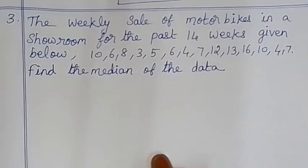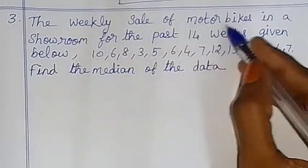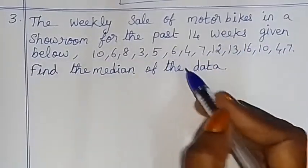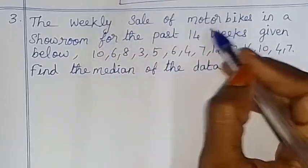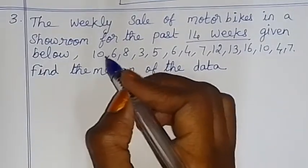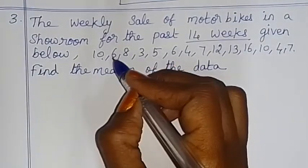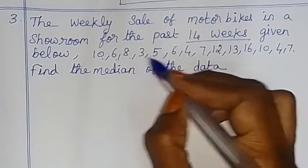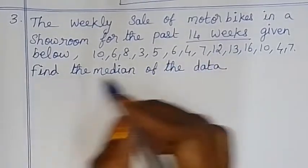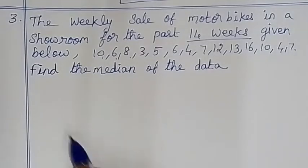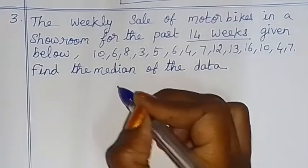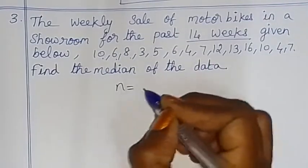Now, the weekly sale of motorbikes in a showroom for the past 14 weeks is given below. We need to find the median of the data. The number of data points is 14.